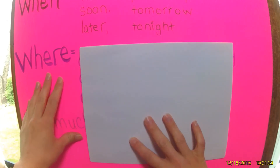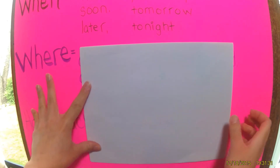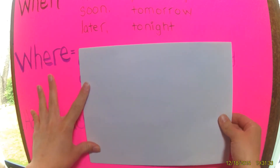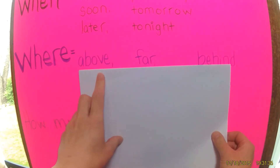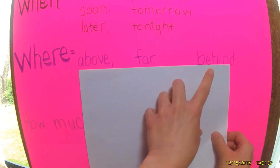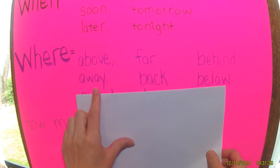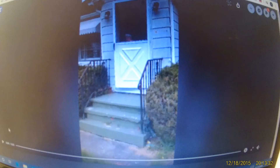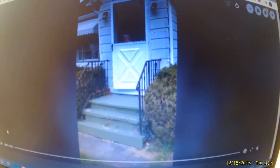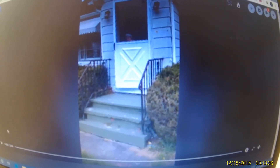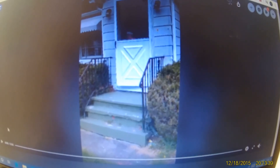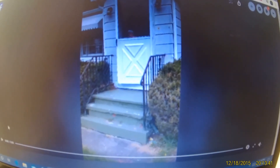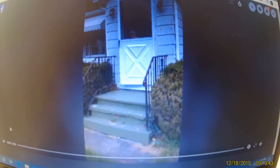Where something takes place is also an adverb. We can use words like above, far, behind, away, back, below, outside, or down. Adverbs always answer the question where. Inside, there, outside, up, or down. Look up. Come here. Look under.